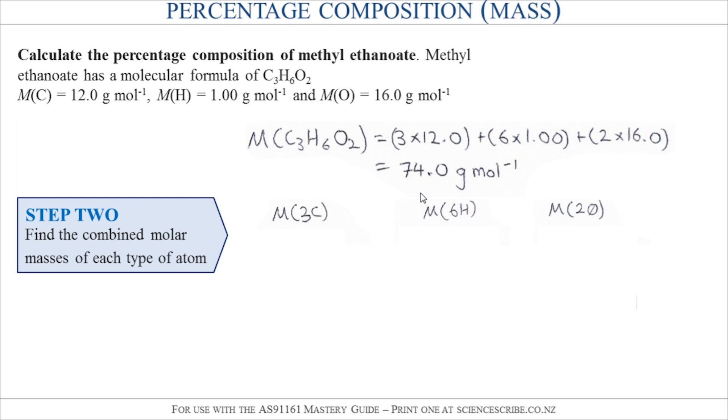Step two is to find the combined molar masses for each type of atom. So I've got going across three carbons, six hydrogens, and two oxygens.